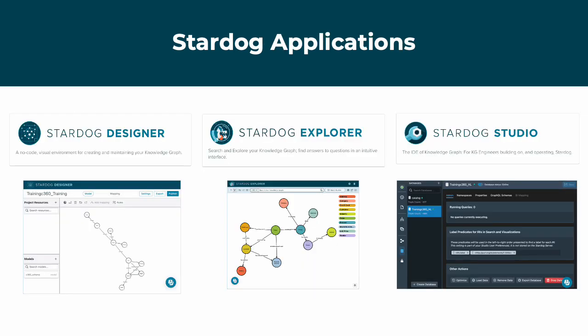Stardog has three front-end application tools. Designer: a no-code visual environment to model, map, and publish data for your knowledge graph. Explorer: an intuitive interface to visually browse and query your knowledge graph. And Studio: a complete IDE to program your knowledge graph.